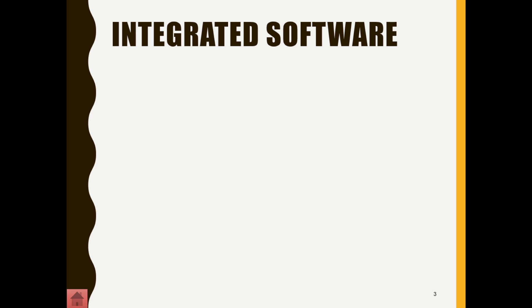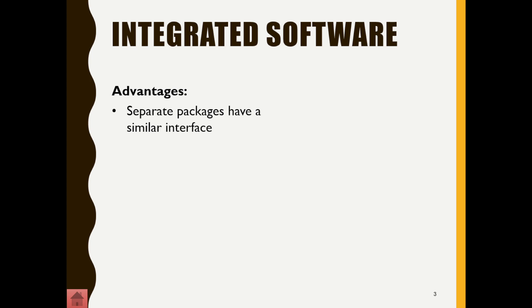Before the idea of a graphical user interface or GUIs, programs looked very different to the way they look now, and it was quite hard to learn how to use a new program. It was also very difficult to share data between programs. Some advantages come with integrated software — when we talk about integrated software, we're talking about a software package, which is a group of programs installed as one application on your computer.